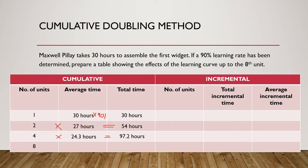This process can then be continued for each subsequent doubling point — double 8 would be 16, double 16 would be 32, and so forth. Remember that this method can only be used on doubling points. Looking at the cumulative section of the table, we see that the average time per unit is decreasing; however, the total time to produce all units is still increasing.